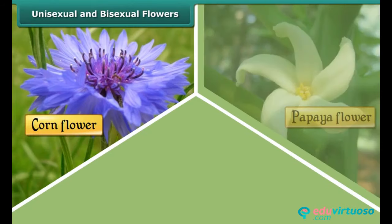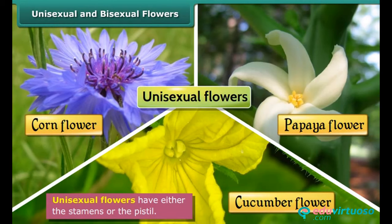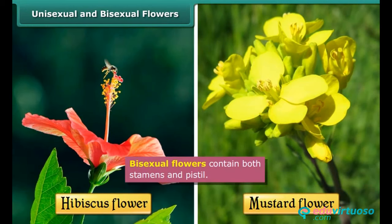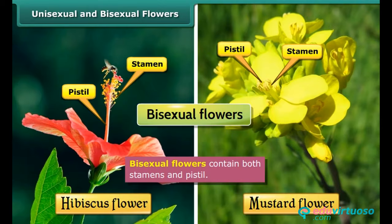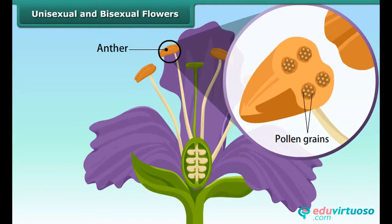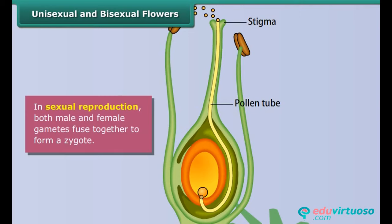Unisexual and bisexual flowers. Corn, papaya and cucumber flowers have either the stamens or the pistil. These types of flowers are called unisexual flowers. On the other hand, hibiscus and mustard flowers contain both stamens and pistil. These types of flowers are called bisexual flowers. The anther of a flower contains pollen grains which produce male gametes, and the female gamete is formed in an ovule. In sexual reproduction, both male and female gametes fuse together to form a zygote.